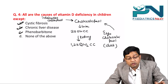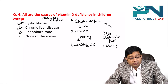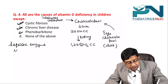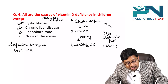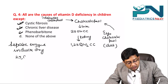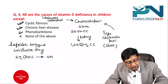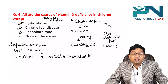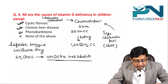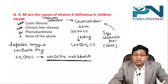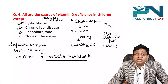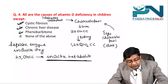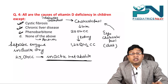Phenobarbitone can also cause vitamin D deficiency. It is a hepatic enzyme inducer drug that converts 25-hydroxycholecalciferol into an inactive metabolite. With no active 25-hydroxy form, there is no production of 1,25-dihydroxycholecalciferol, causing rickets. Since all options are valid causes of vitamin D deficiency, the answer is 'none of the above.'